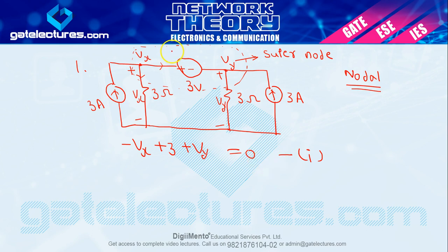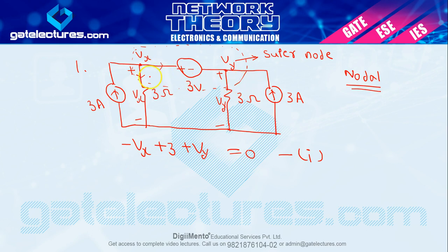हमने super node analysis में सबसे पहले सिर्फ Vx, Vy और 3 volt को देखा और एक KVL equation लिख लिया। अब next procedure यह है कि Vx और VY दोनों को एक ही node मानकर, दोनों के equations एक ही equation में लिख लेते हैं। इस 3 volt वाली branch को eliminate कर देना है, क्योंकि इसके लिए already हमने equation number 1 लिख लिया है।